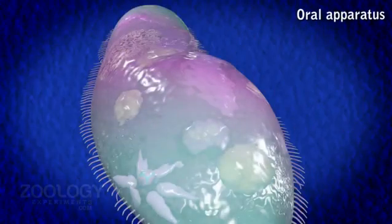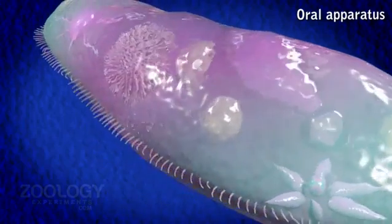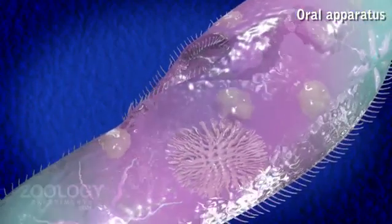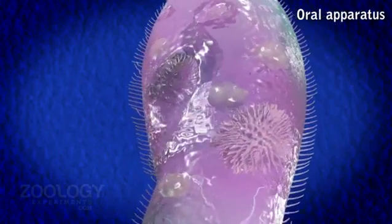Oral apparatus. In Paramecium, oral groove leads ventrally and posteriorly as a tubular structure called vestibule. It leads directly into a wide tubular passage, the buccal cavity.